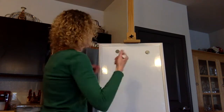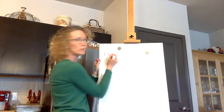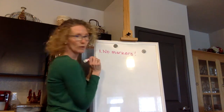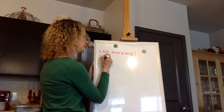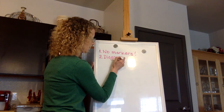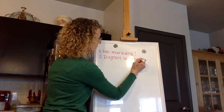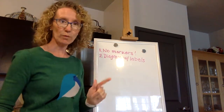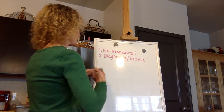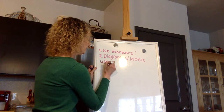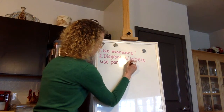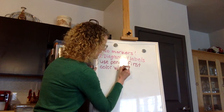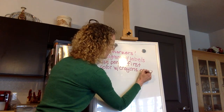Let's write a couple of things up here on the board. Number one: no markers — exclamation point. Number two: you need a diagram with labels of your animal. Number three: use pencil first. And then color with crayons or colored pencils — you can use both.